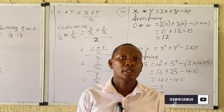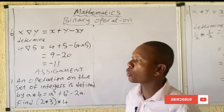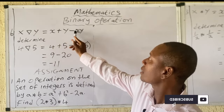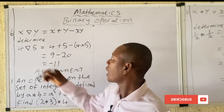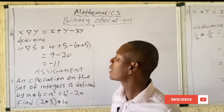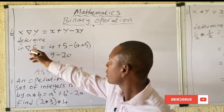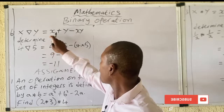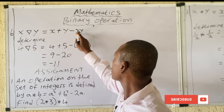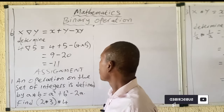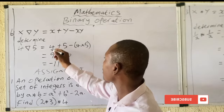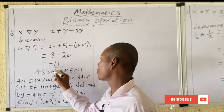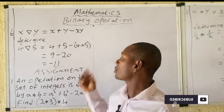Let's solve one more example: x∠y = x + y − xy. Determine 4∠5. Here x = 4 and y = 5: 4 + 5 − (4×5) = 9 − 20 = −11. The answer is −11.